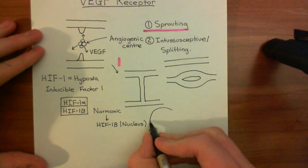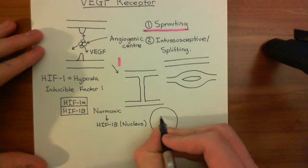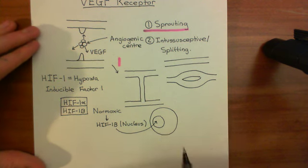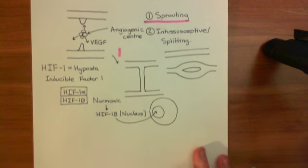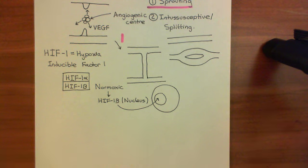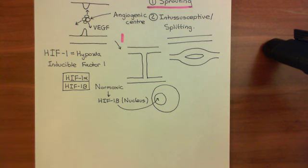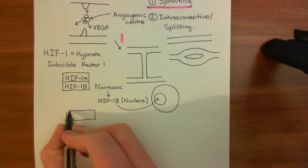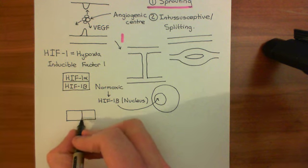The reason there is no HIF-1 alpha is that the instant the cell makes some HIF-1 alpha protein, it's destroyed. It's not that you don't make HIF-1 alpha — it's that the instant you do make it, it's destroyed. This occurs because HIF-1 alpha has a special region known as the oxygen-dependent degradation domain.